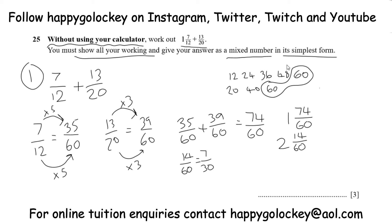And that's as far as we can go. So let's put it all together. Don't forget your whole number as well. We have 2 and 7 30ths as your final answer.